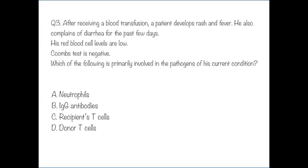Question 3. After receiving a blood transfusion, a patient develops rash and fever. He also complains of diarrhea, and his red blood cell levels are low. Coombs test is negative. Which of the following is primarily involved in the pathogenesis of his condition? Option A: neutrophils. Option B: IgG antibodies. Option C: recipient's T cells. Option D: donor's T cells. The answer is donor's T cells.